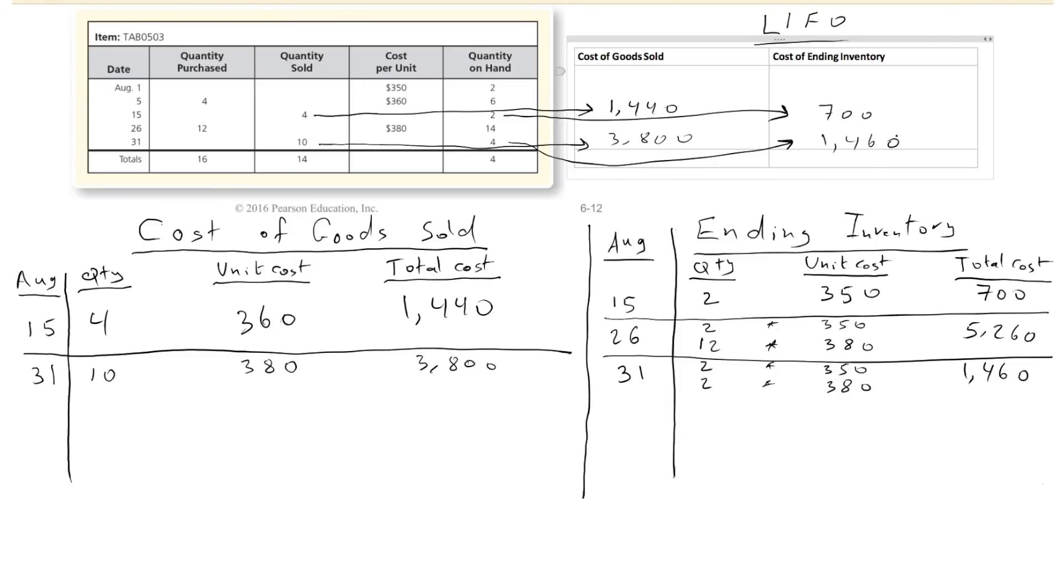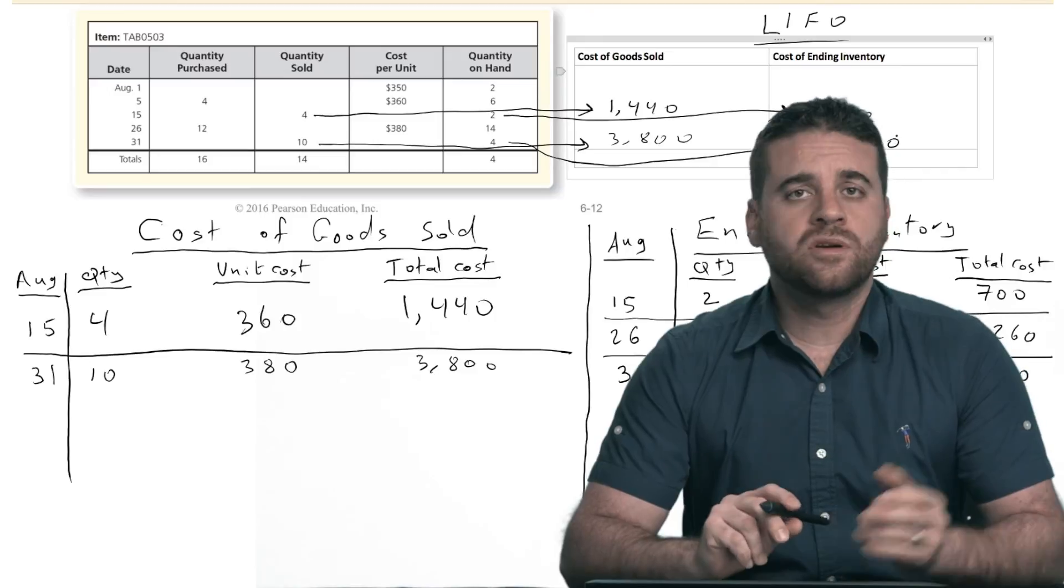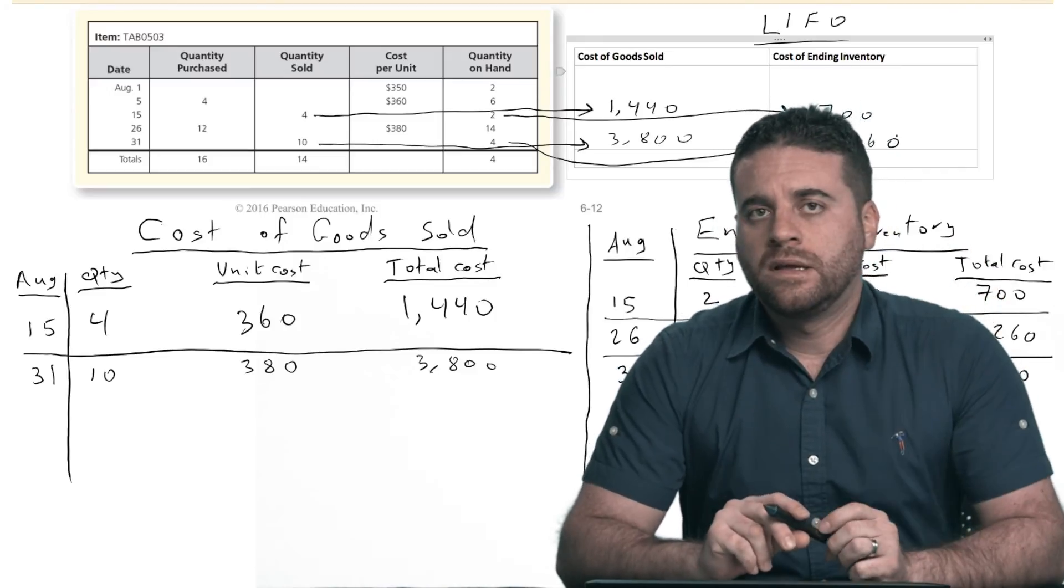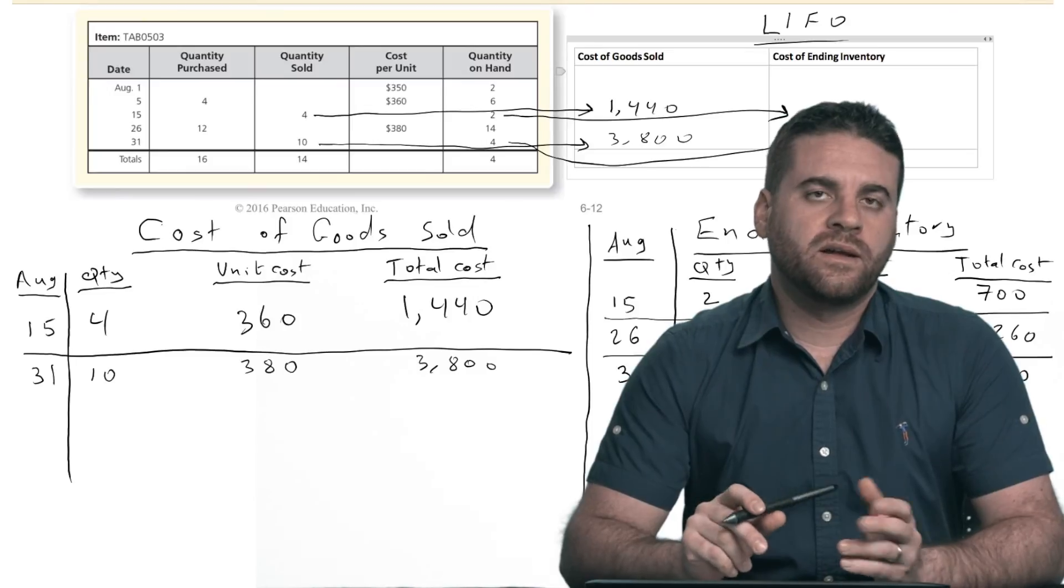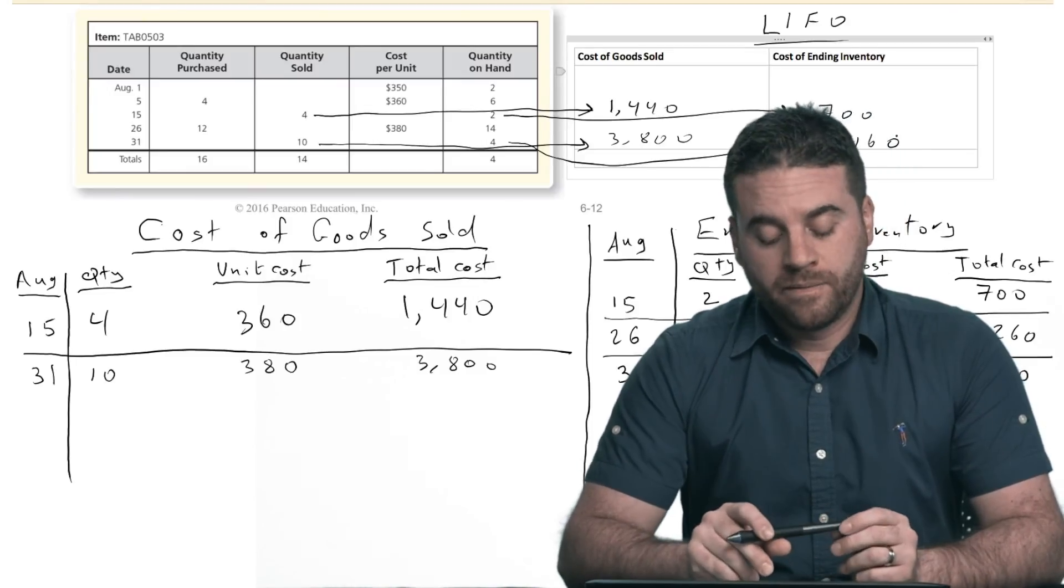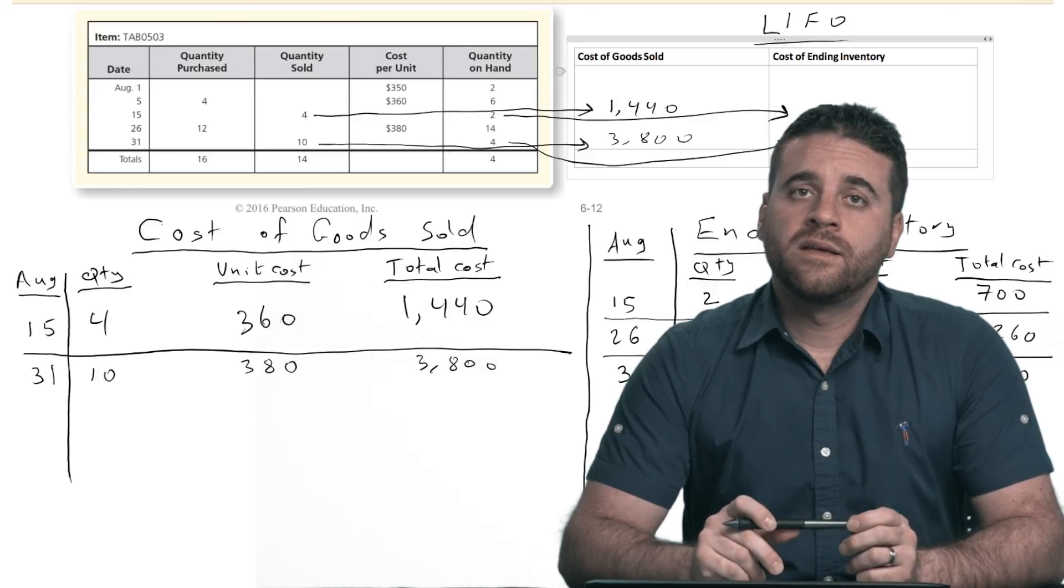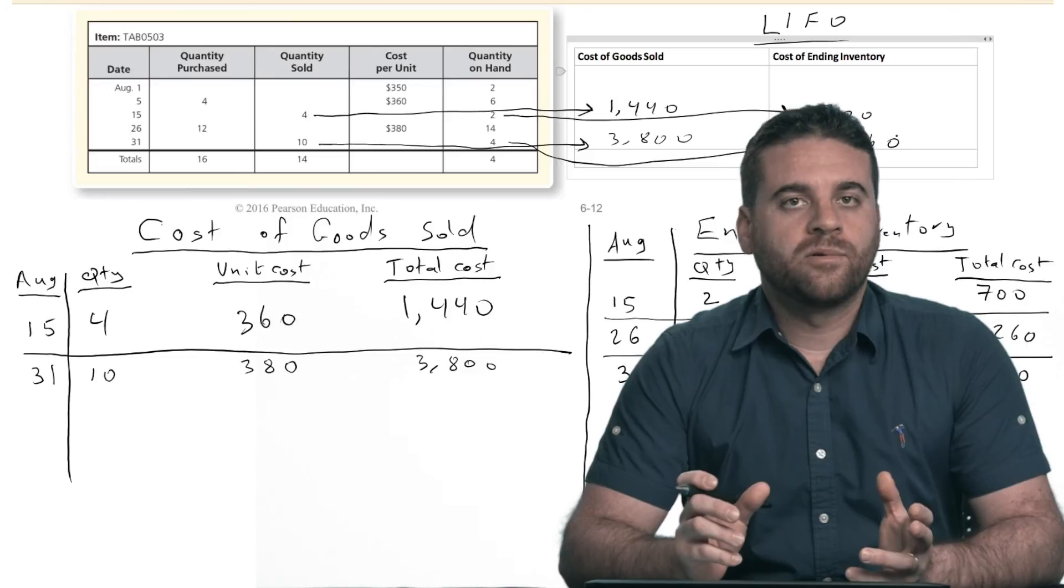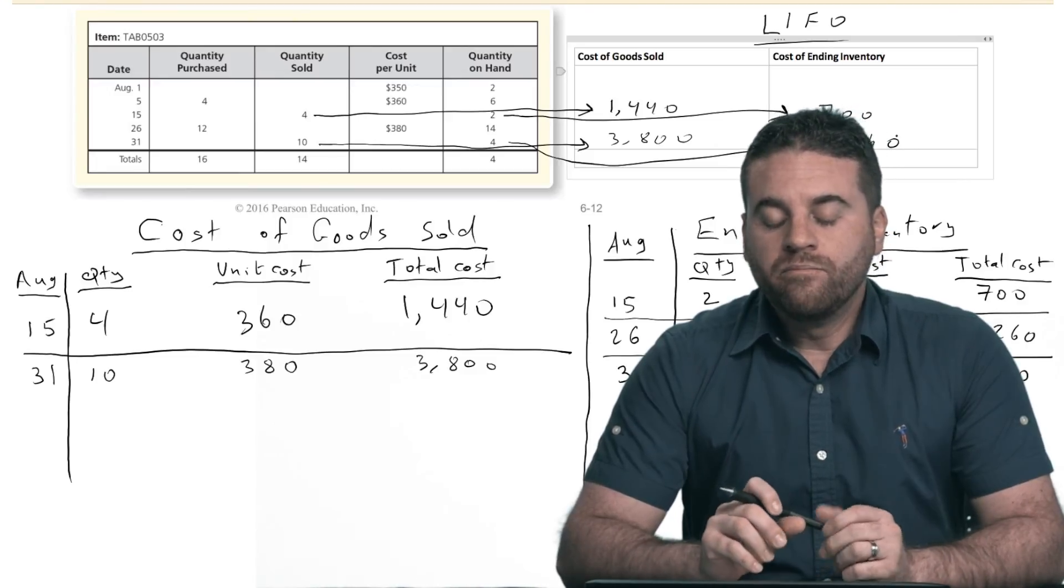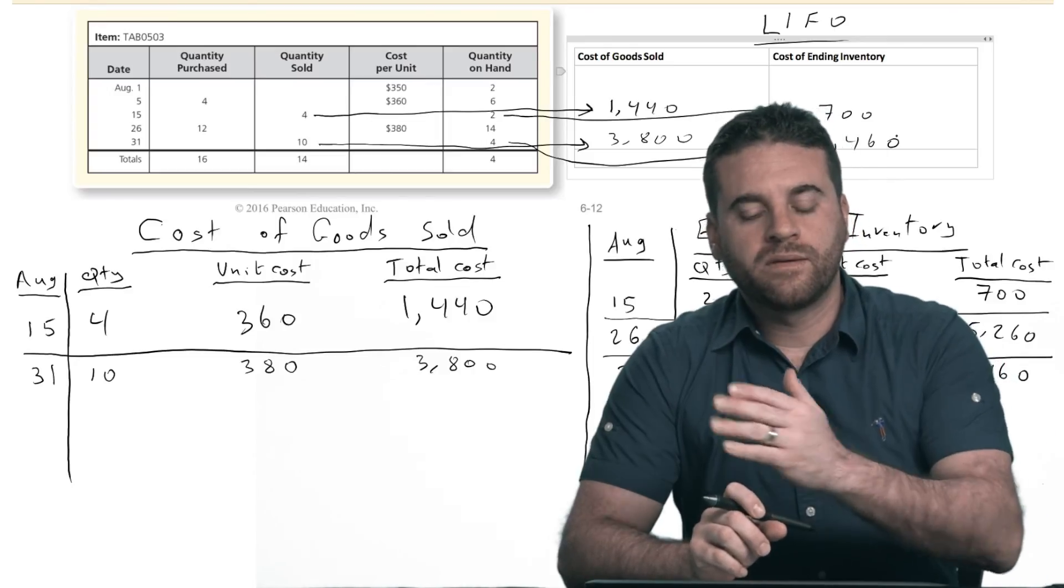Now, you might be asking yourself why a company will use LIFO instead of FIFO. Why don't they just go in order? I mean, it just feels more logic to go in order and not to go backwards. The main reason for companies to use LIFO is to save taxes, to save income tax. How does that work? Well, remember that usually, most of the time, the cost will increase over time.